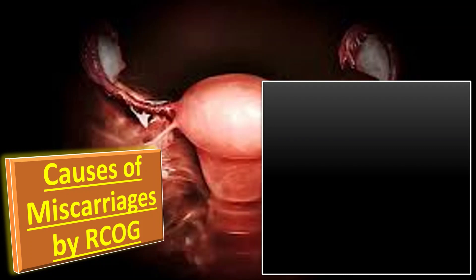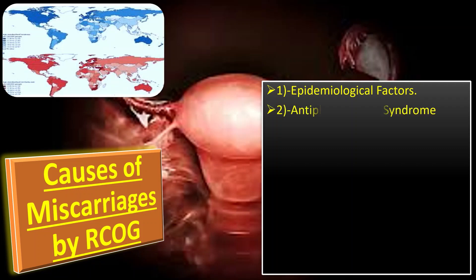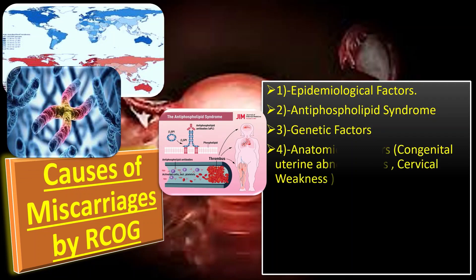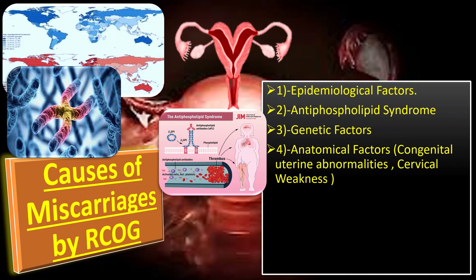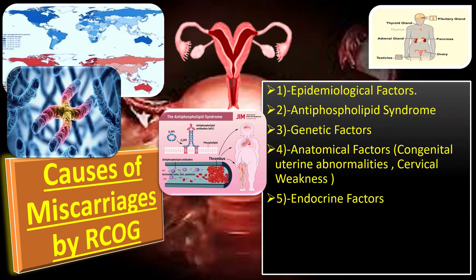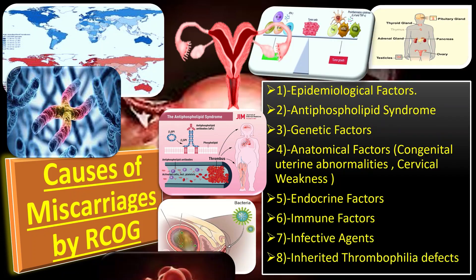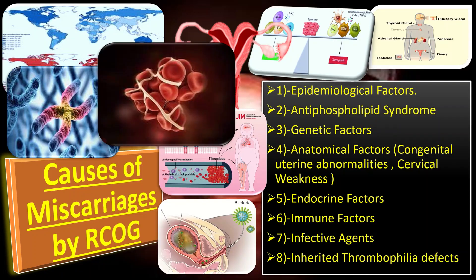The causes include: first, epidemiological factors; secondly, antiphospholipid syndrome; then genetic factors; anatomical factors like congenital uterine abnormalities and cervical weaknesses; endocrine factors; immune factors; infective agents; and inherited thrombophilic defects.